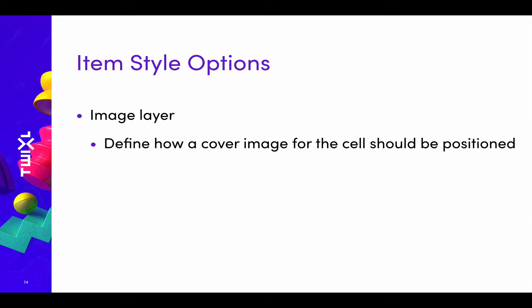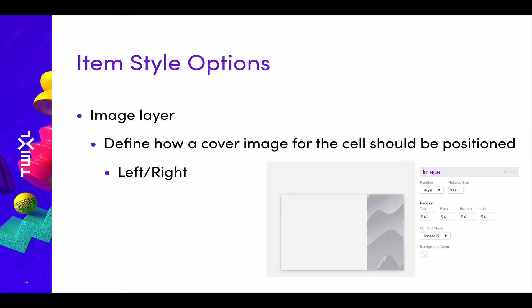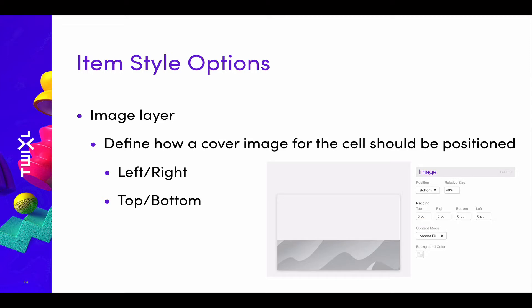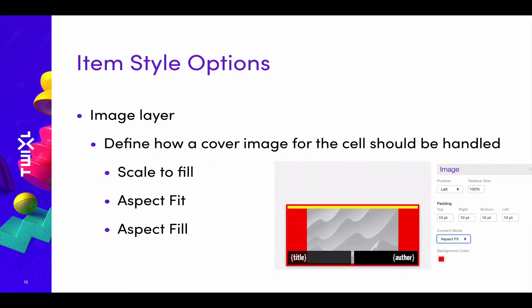A third type of item style is the image layer, which defines how a cover image for the cell should be positioned within that cell — either on the left or right side, or top or bottom. You can define a percentage to select how large the image will be within the cell. In addition, you can define how the image itself should be handled: whether it's scale to fill, aspect fit, or aspect fill. You'll see the results in your preview pane.